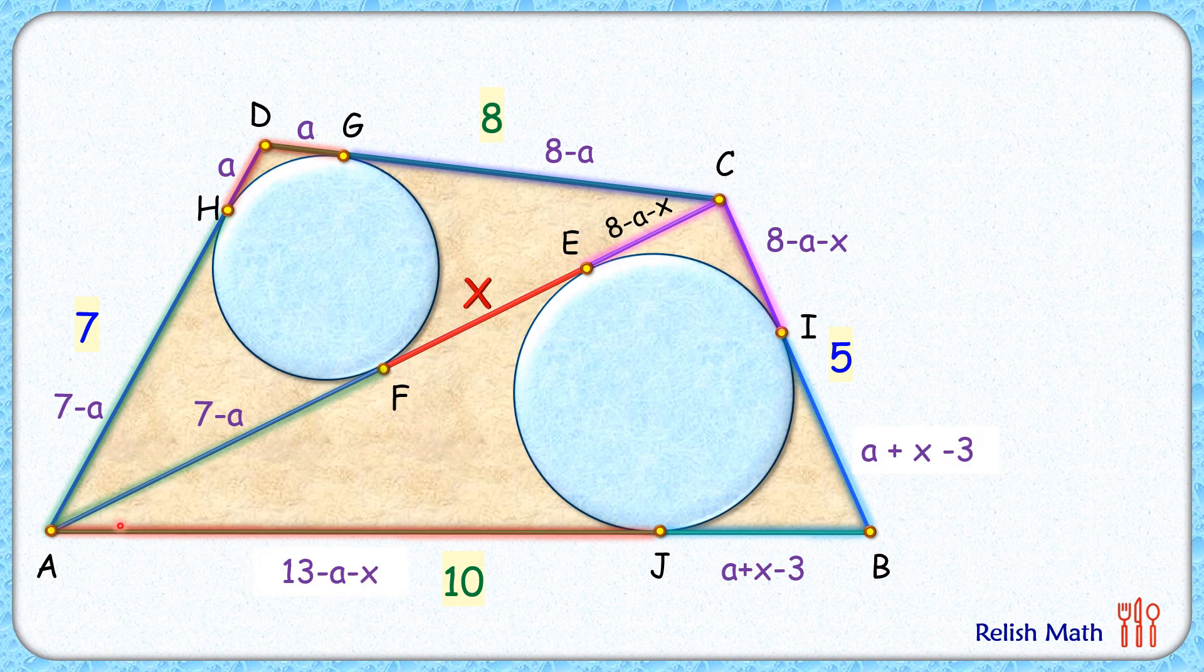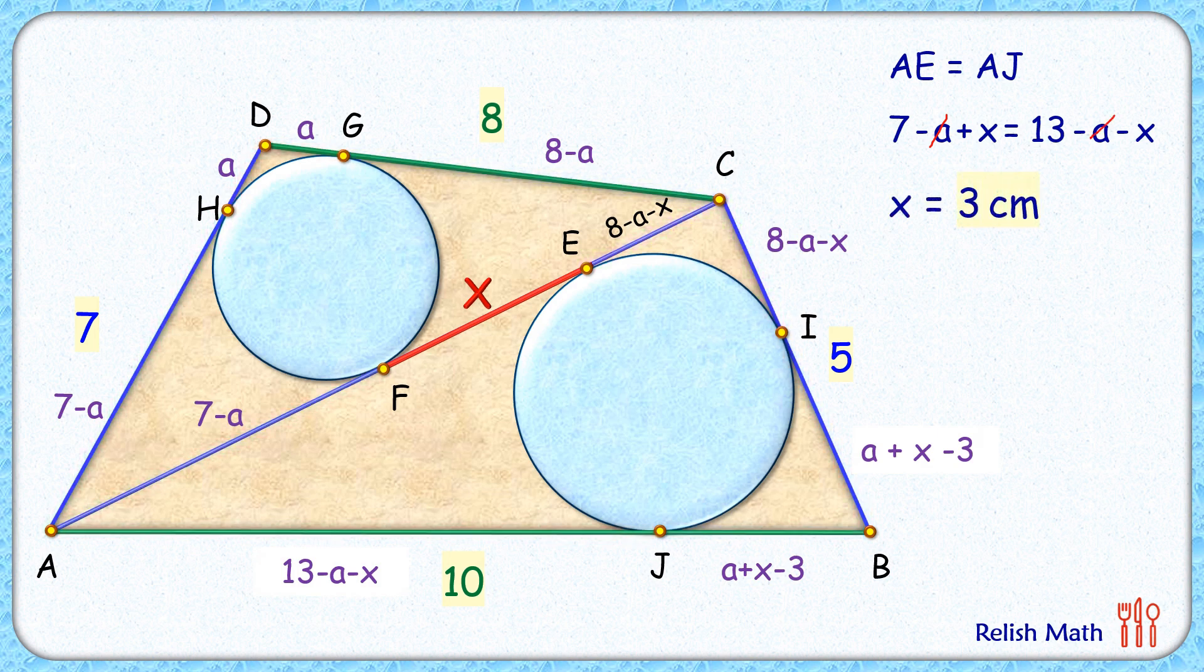So we are getting here AE and AJ are equal. AE length is 7 minus a plus x, and AJ we have calculated as 13 minus a minus x. Equating both sides, negative a will get cancelled. Solving it, we'll get x as 3 centimeters, and that's our answer.